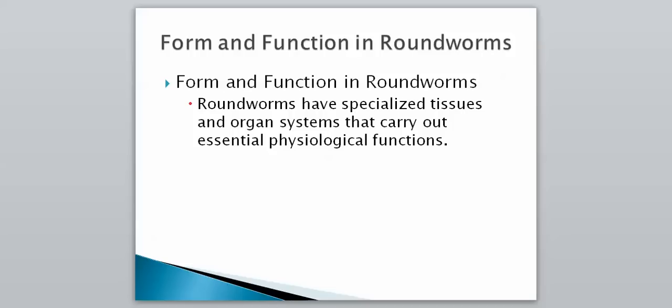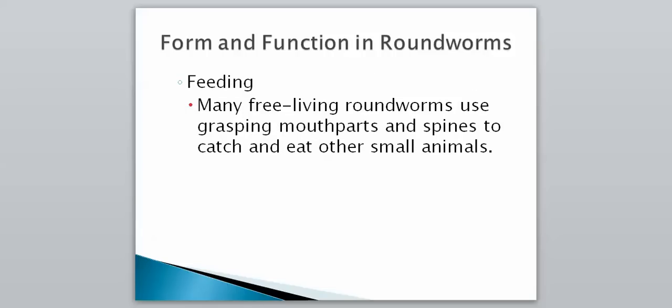Looking at form and function in roundworms — what do they look like and how do they move? They have specialized tissues and organ systems that carry out their essential physiological functions, so they do have organ systems. For feeding, many free-living roundworms use grasping mouthparts and spines to catch and eat other small animals. They have a strong mouth and grasping mouthparts to help chase prey down.